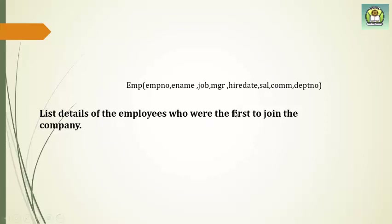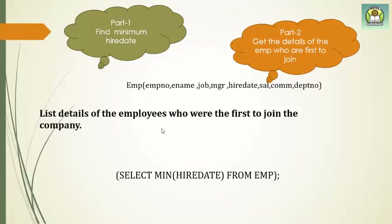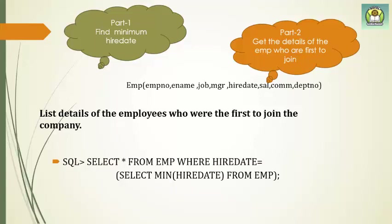The hire date should be the minimum, meaning they joined the company first. First part: find the minimum hire date — SELECT MIN(hire date) FROM EMP. Second part: get the details of the employee whose hire date equals that minimum. The query is SELECT * FROM EMP WHERE hire date EQUALS (SELECT MIN(hire date) FROM EMP). Since only one particular date can be the minimum, we use equals instead of IN, though you can also use IN.